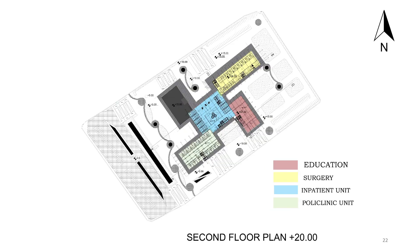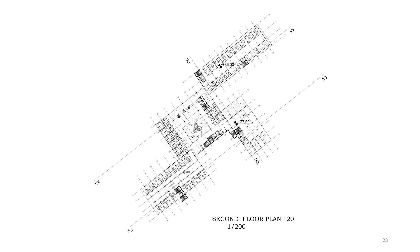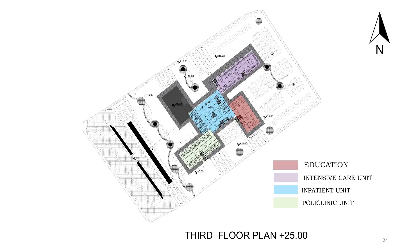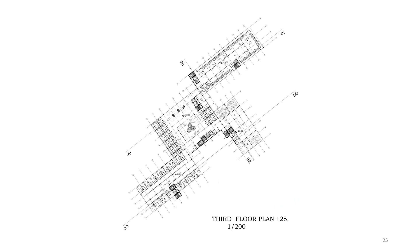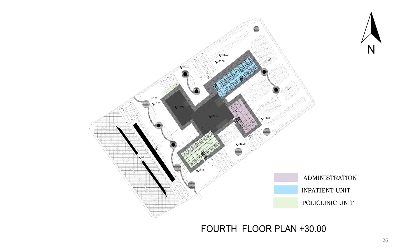This is the second floor plan. The second floor plan consists of education, surgery, inpatient unit, and polyclinic unit — this is the connecting part. In the middle area is the inpatient unit. In the intensive care unit, education and polyclinic unit are connecting each other.